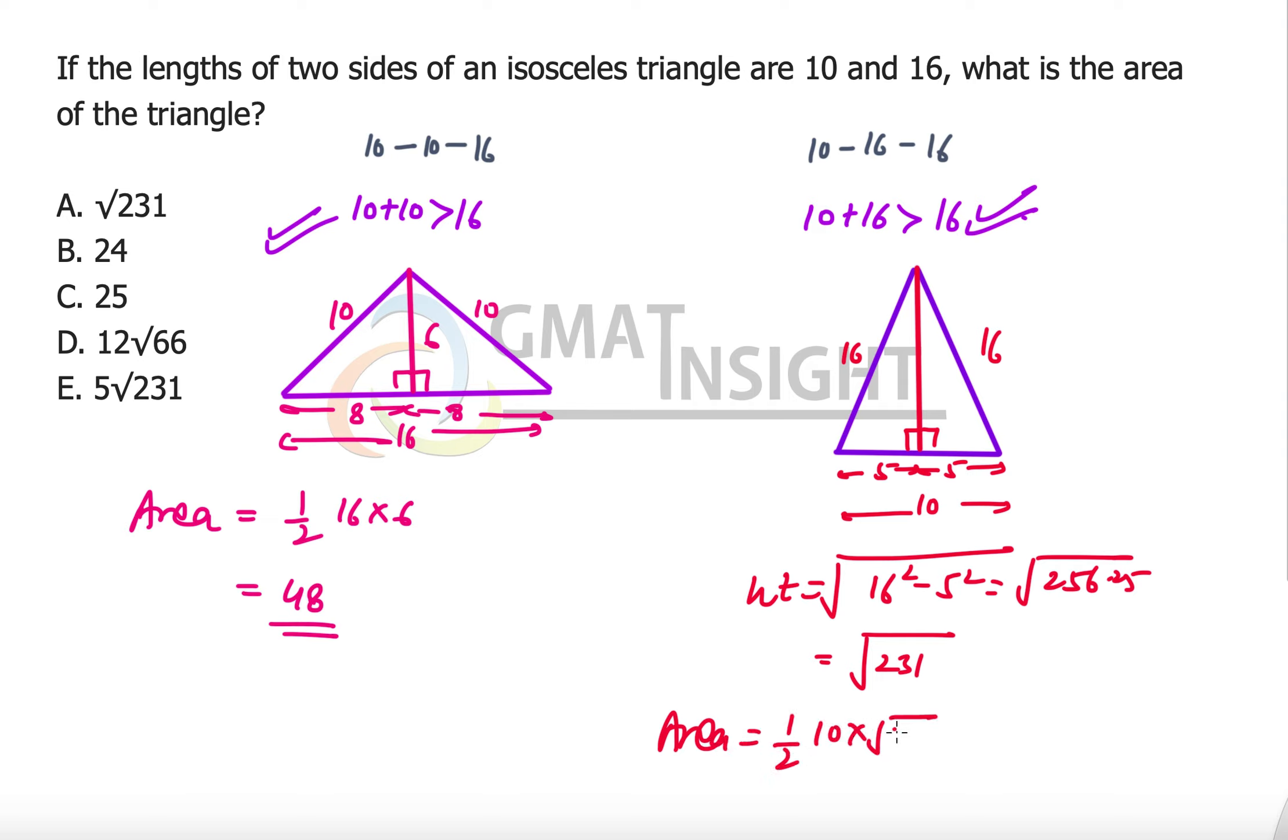This means the area of this triangle will be half of 10 times the square root of 231, which becomes 5 times the square root of 231. 5√231 is option E, so that becomes our answer. I hope you enjoyed learning. Thank you so much for watching.